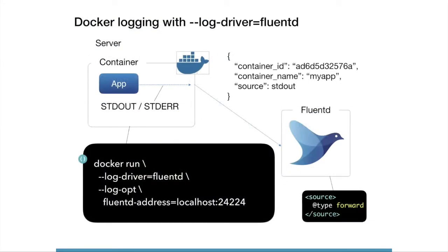Next, we talk about how to collect logs from containers. This is the Docker use case. Docker has a logging driver for sending logs to external systems, and Docker supports the Fluentd logging driver by default. So you can send application logs to Fluentd using the logging driver. The merit is no need to write additional code in your application. On the Fluentd side, you can use the Fluentd input plugin to receive logs from Docker.